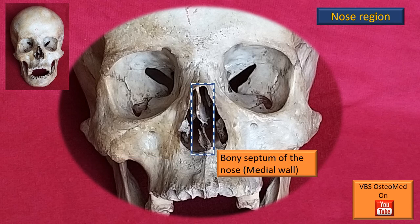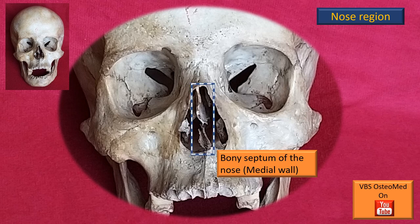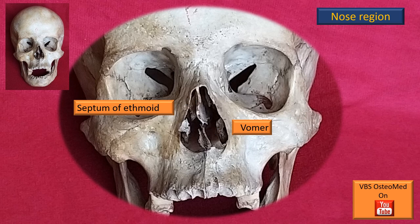Right in the middle of this nasal aperture, you can see the bony septum of the nose — the medial wall of each nasal cavity, right and left. It divides the nasal cavity into a right and a left nasal cavity. This bony septum has two main components visible in this view: the upper part is the perpendicular plate of the ethmoid, also known as the septum of the ethmoid bone, and lower down the larger one is the vomer bone.